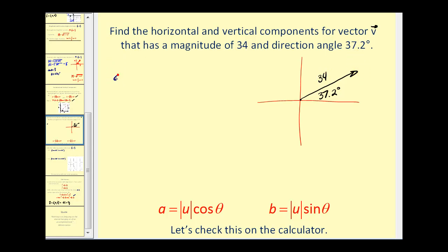The horizontal component a is equal to the magnitude of u, 34 times cos θ. And the vertical component b is 34 times sin 37.2 degrees. Let's go to our calculator.